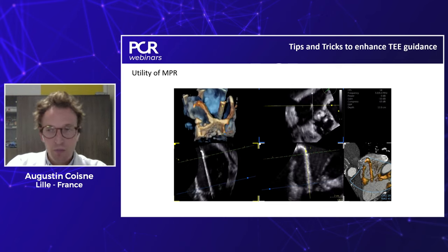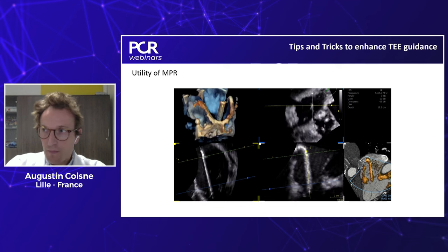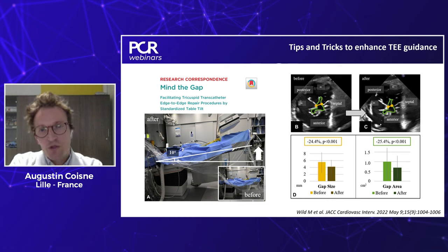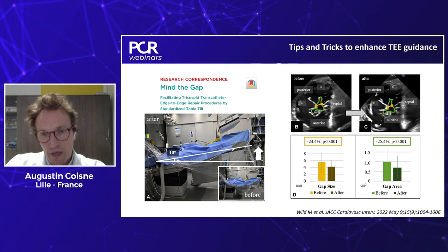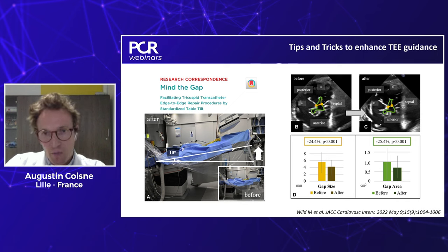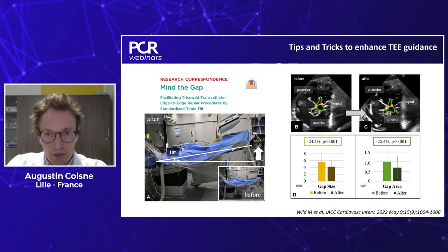MPR can also be used with EchoCity Fusion. You can use dual crop to see the valve from both the right atrium and right ventricle, which can be useful to guide implantation. Another tip is to monitor the gap as proposed by the Erasmus group: tilting the table 10 degrees and raising the head of the patient leads to a significant decrease of both gap size and gap area of around 25%. We are trying to use this as much as possible in our practice.